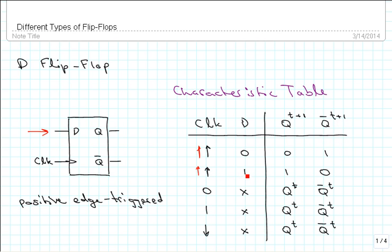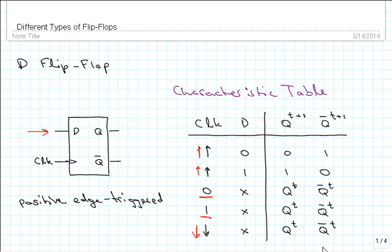Similarly, if you input a one, then at time t+1 we will see a one at the Q output and zero at the Q-not output. If the clock is either at the zero level, at the one level, or makes a down transition, then it does not matter what the data is — whatever is at the data input will not be read in and the flip-flop just retains its previous state, so Q(t+1) will be Q(t) and Q-not(t+1) will be Q-not(t).